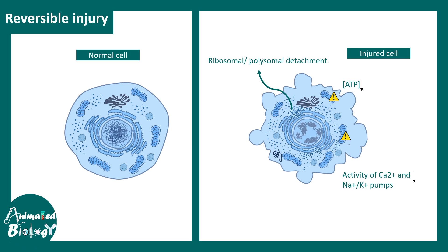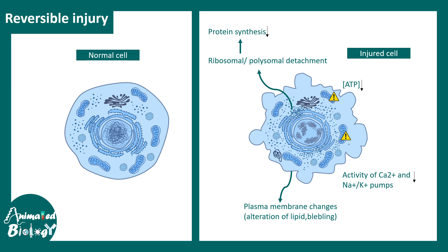Ribosomes are normally attached to the rough endoplasmic reticulum and are the protein-forming machinery. When they detach and move freely in the cytosol, translation is altered and overall protein synthesis decreases in injured cells. Several changes in the plasma membrane can also be observed, including alteration in lipid composition and blebbing of the membrane.